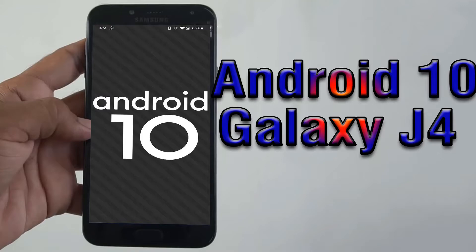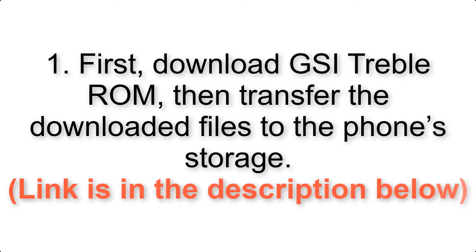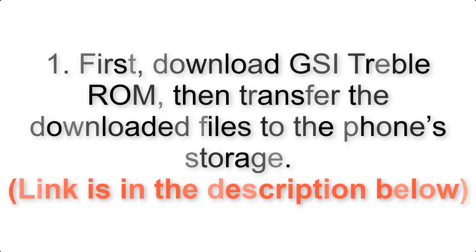Install Android 10 on Galaxy J4 via AOSP GSI treble ROM. Please check the description for important notes and all the download links. First, download the ROM and Gapps packages, then transfer the downloaded files to the phone storage. The link is in the description below.